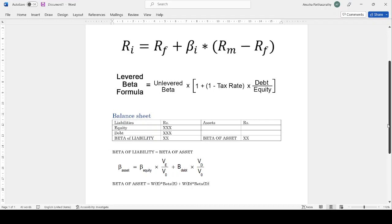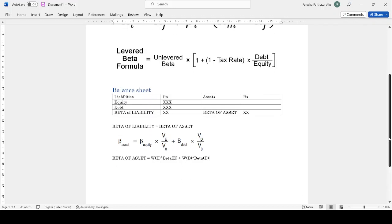Beta L equals beta of A. So in ISM, we have this formula which states that beta of asset equals beta of equity times value of equity divided by value of the organization plus beta of debt times value of debt divided by value of the organization. So here the beta of asset will be the unlevered beta and beta of equity will be the levered beta.